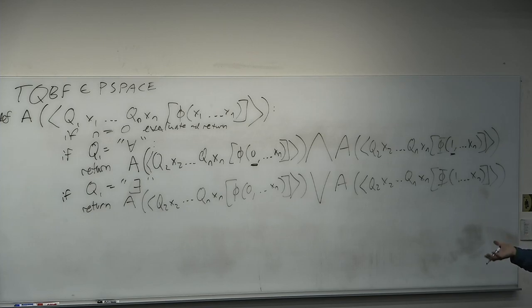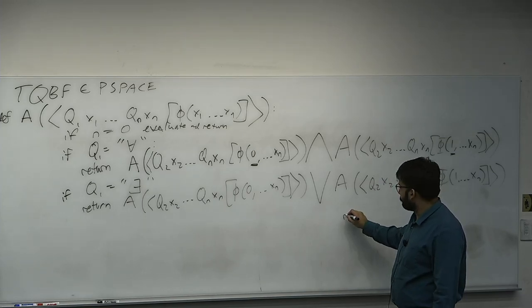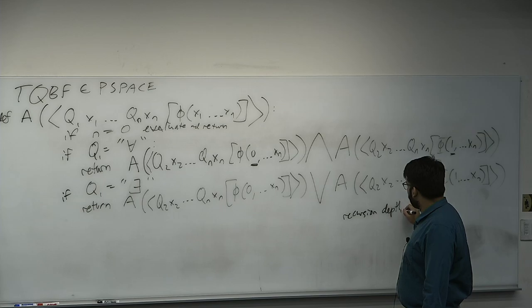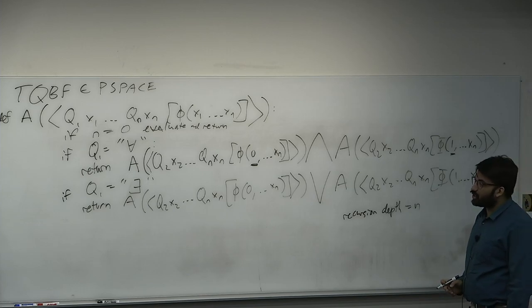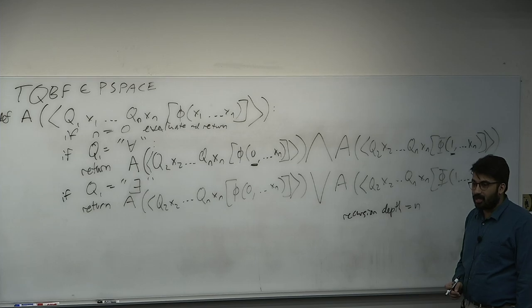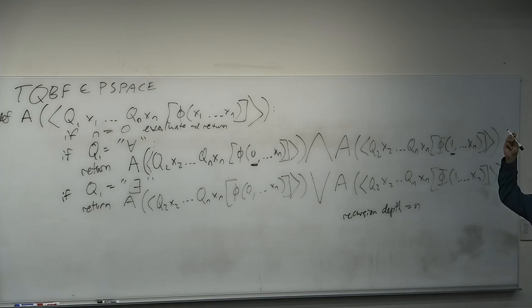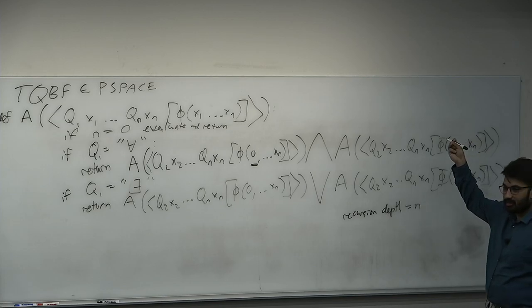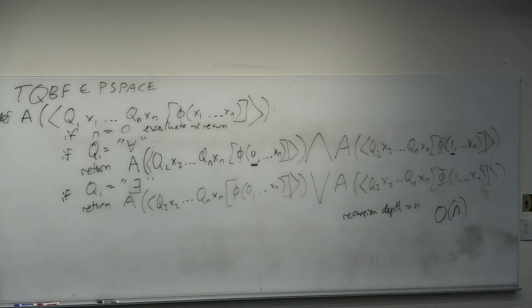What is the space complexity of this algorithm? We take recursion depth times stack frame size. The recursion depth is N. What's the size of a stack frame? Once you finish the recursion all the way down, you only need to return a single bit — whether the base case was true or not. So stack frames return just a single bit up the stack. Total space is O(N) — not only polynomial, but linear space.